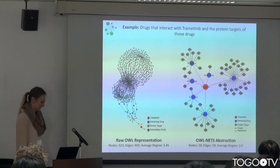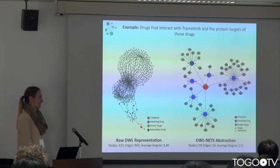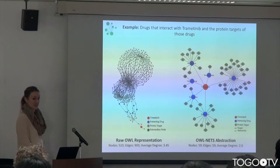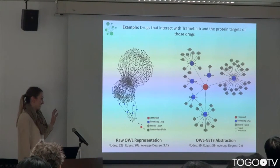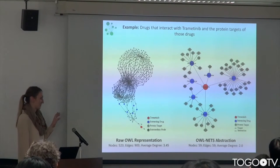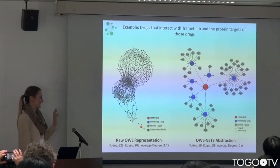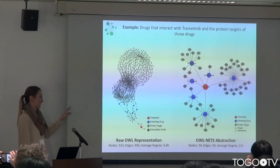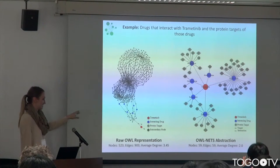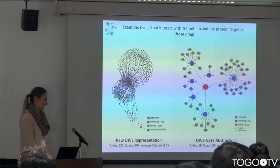This is an example of what it does — a simple toy query that looks at drugs that interact with trametinib and the protein targets of those interacting drugs. We've shown the raw OWL representation here, and I've colored the nodes so you can see all that's being removed when we get to the OWL-NETS abstraction. In this case, red nodes represent trametinib.